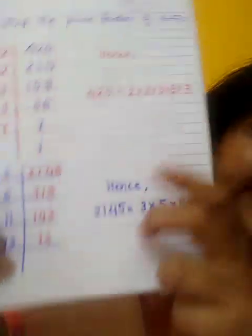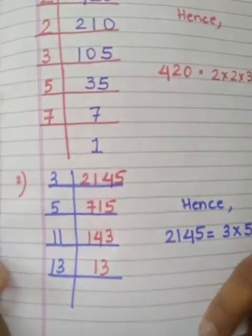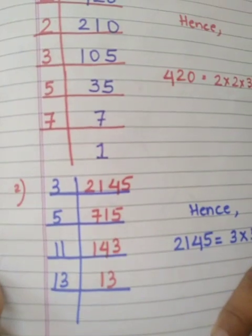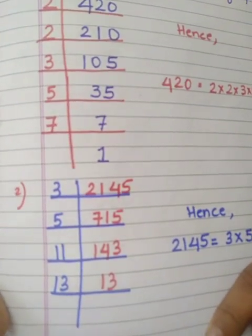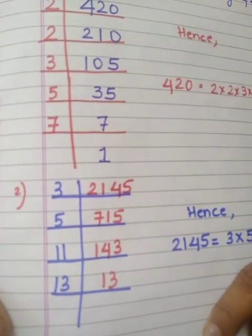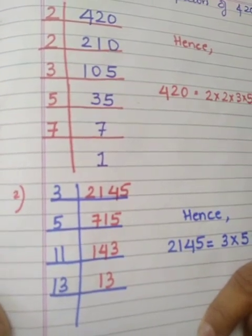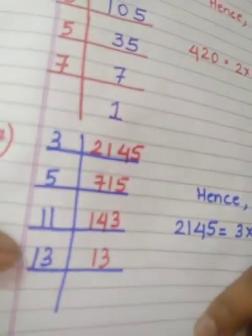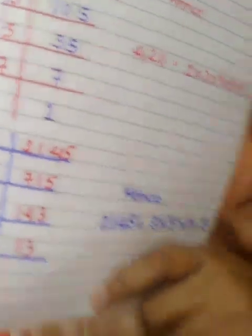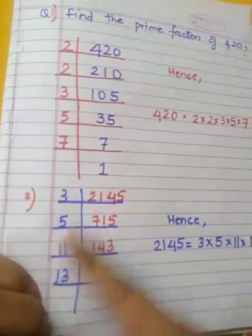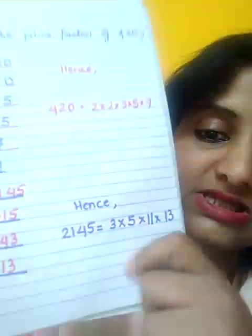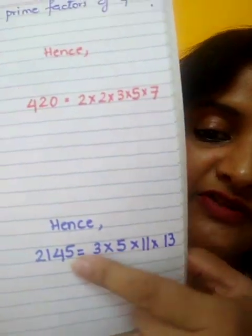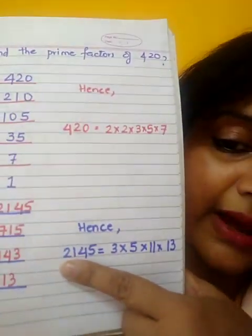I have taken one more example for you children — just go through it clearly. The number is 2,145. The number is not divisible by 2 at first, so I have started with 3, then 5, then 11, then 13. You have to keep in mind that whatever numbers you are taking should be prime numbers only. And if I find the product of these prime factors, we will get the number back. I hope you understood this method.